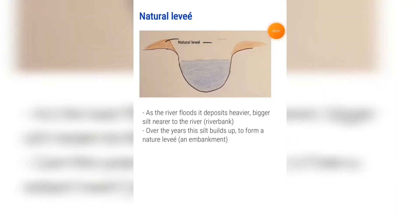A natural levee: as the river floods, it deposits heavier and bigger silt nearer to the river on the river bank. This is because as it spreads over the floodplain, it doesn't have the energy to carry the bigger and heavier silt further away, so it deposits it near the river. Over the years this silt builds up to form a natural levee, otherwise known as an embankment.